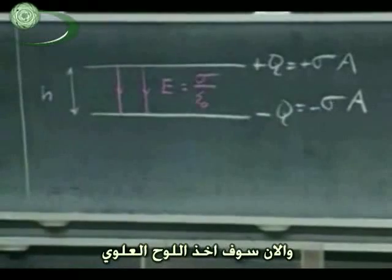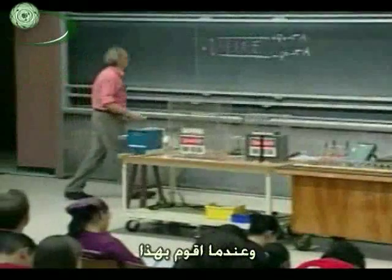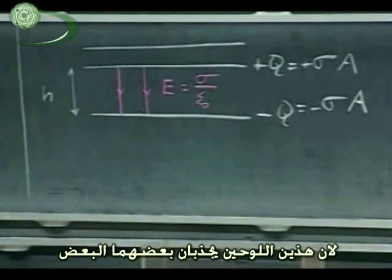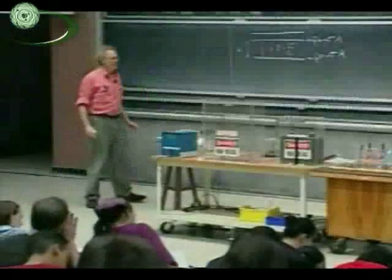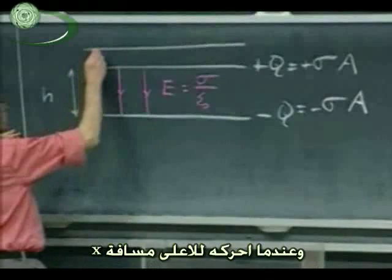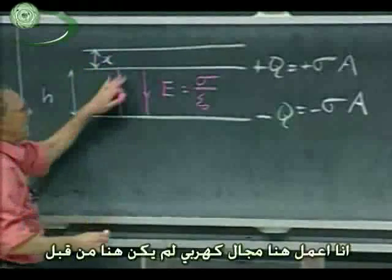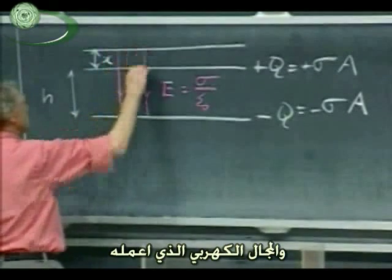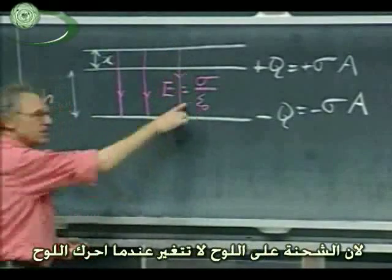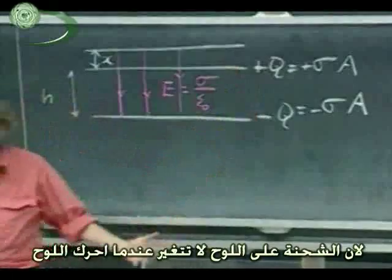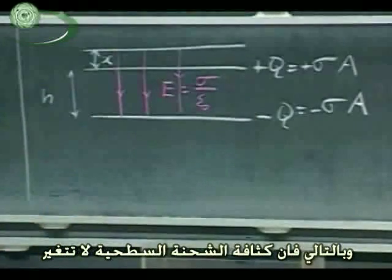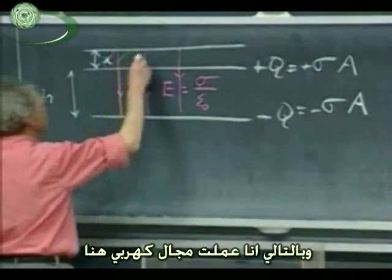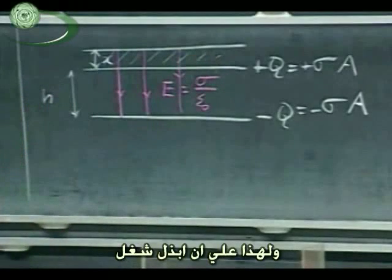Now I'm going to take the upper plate and move it up. As I do that I have to apply a force, because these two plates attract each other, so I have to do work. As I move this up over a distance X, I am creating electric field here that wasn't there before. The electric field that I'm creating has exactly the same strength as before, because the charge on the plates is not changing when I'm moving — the surface charge density is not changing. All I do is increase the distance. And so I am creating electric field in here, and for that I have to do work.